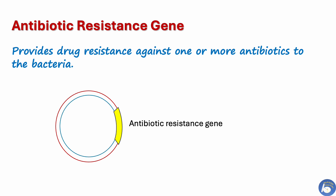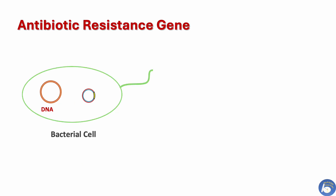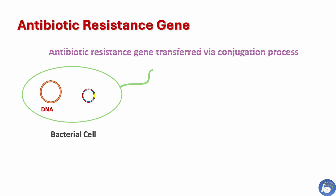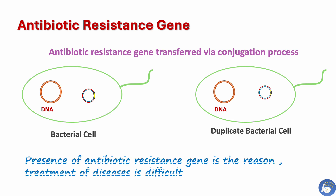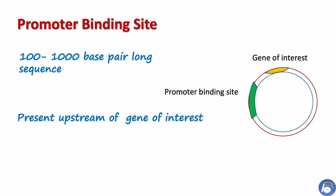The antibiotic resistance gene is another important component of the plasmid. This gene sequence produces certain proteins that provide drug resistance against one or more antibiotics to the bacteria. A plasmid can also transfer the antibiotic resistance gene from one bacterial cell to another. Due to this property, antibiotic resistance among bacteria spreads quickly and treatment of certain bacterial diseases becomes difficult.